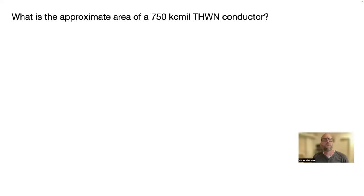What is the appropriate approximate area of 750 kcmil THWN conductors? So the appropriate area is 1.0496, Chapter 9, Table 5. Chapter 9, Table 5. Remember that table has the sizes on the left-hand side, and then you just work your way. I think it's the third column in. It gives you the actual area.